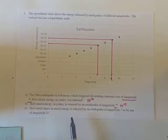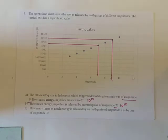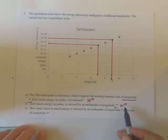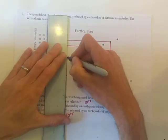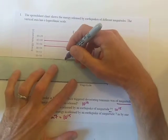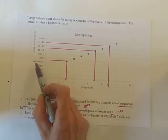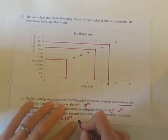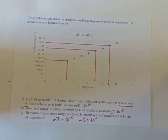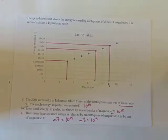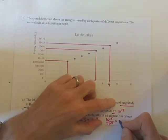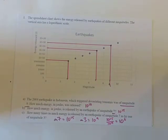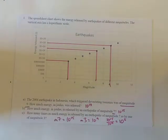The third part asks how many times as much energy is released by an earthquake of magnitude 7 compared to one of magnitude 3. Magnitude 7 is 10 to the 15 joules. Magnitude 3 comes out on the scale halfway between 10 to the power of 8 and 10 to the power of 10, so that's 10 to the power of 9. To find how many times as much, we do 10 to the 15 divided by 10 to the 9. Using our index laws we get 10 to the power of 6 — so a million times as much energy is released by an earthquake of magnitude 7.